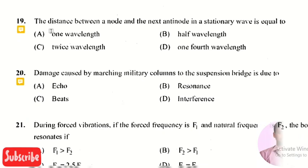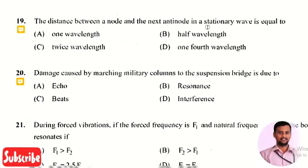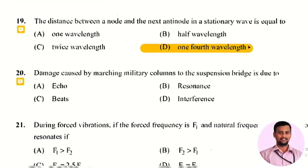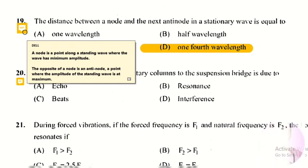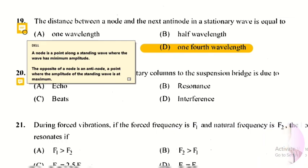The next question: the distance between a node and the next antinode in a stationary wave is equal to? The right answer is option 4, one-fourth of the wavelength. A node is a point along a standing wave where amplitude is minimum, while an antinode is where amplitude is maximum. The distance between them is one-fourth of the total wavelength.